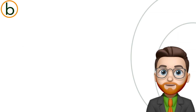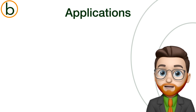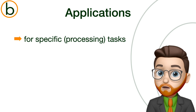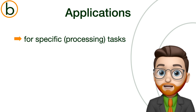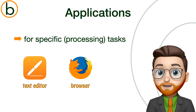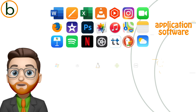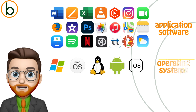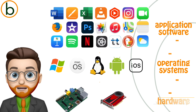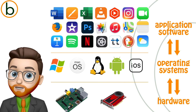On top of the operating system, you have the applications or apps. These are the programs you use to perform specific tasks — writing a letter with a text editor, browsing the web with a browser, or watching videos with a media player. These apps run on top of your operating system, which they rely on to work. That means they need to communicate with the system and speak the same language.